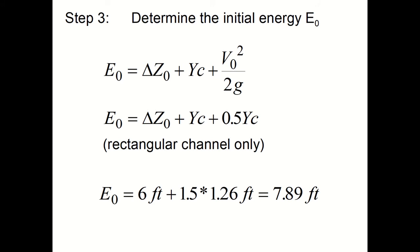Now we'll determine the initial energy of the water coming in using the standard energy equation. So E₀ equals delta Z₀ plus Yc plus V₀ squared over 2g. Now recalling from a rectangular channel only, the velocity head at critical depth is equal to 0.5 times the critical depth. So that can be substituted for the velocity to calculate the initial energy of the water as it enters the drop structure, that being 7.89 feet.